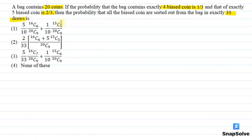Option 1: 5/10 × 16C6/20C9 + 1/10 × 15C5/20C9. Option 2: 2/33 × (16C6 + 5×15C5)/20C9. Option 3: 5/33 × 16C7/20C9 + 1/10 × 15C6/20C9. Option 4: None of these.